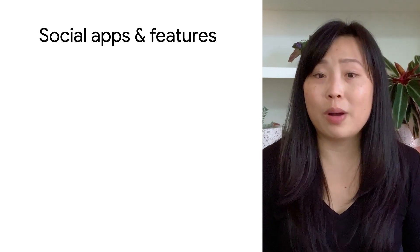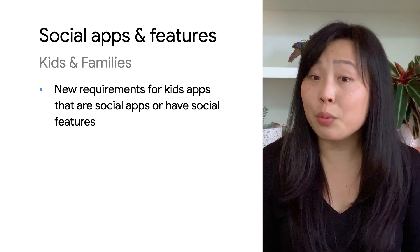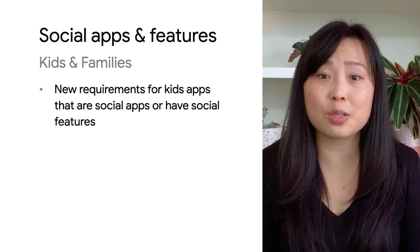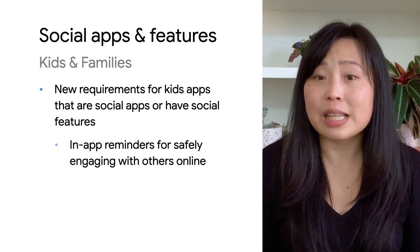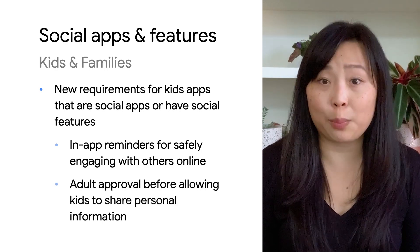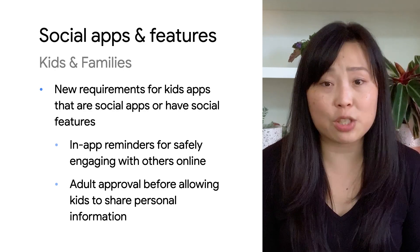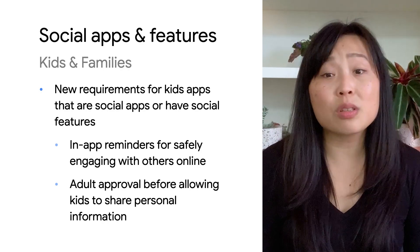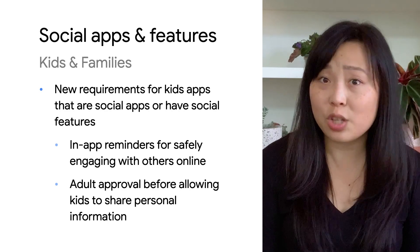We want kids to be able to have a safe online experience. So we're adding new requirements in our families policy for kids' apps that are social apps or have social features. We're requiring these apps to have in-app reminders for safely engaging with others online, adult approval before allowing child users to share personal information with others, and a method for adults to be able to manage these social features on an ongoing basis. As a reminder, we do not allow families' apps whose primary purpose is to allow children to chat with strangers.